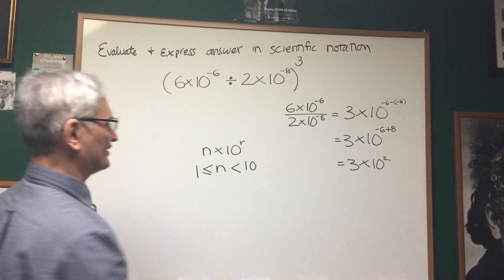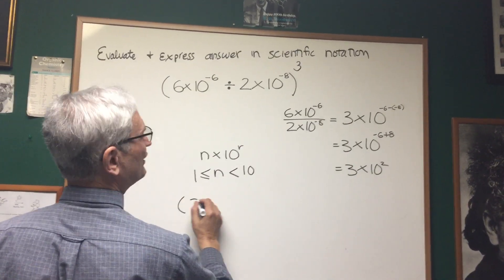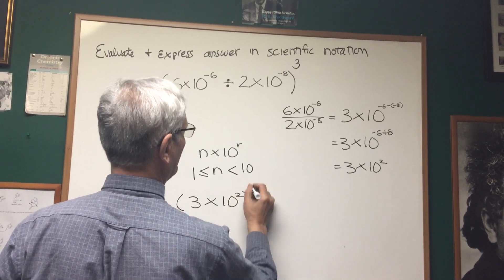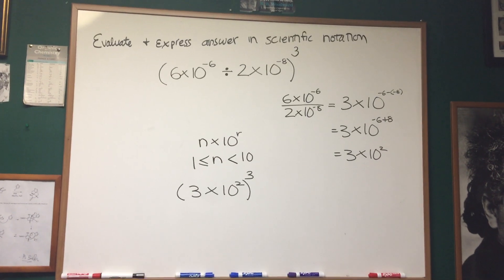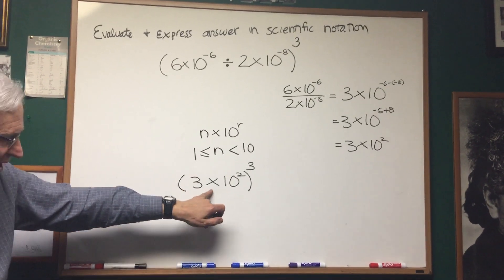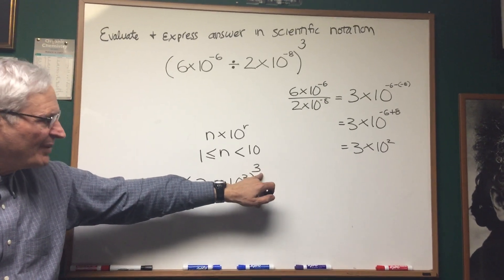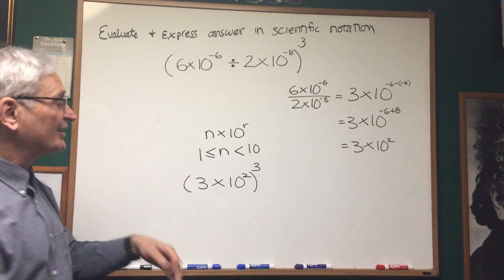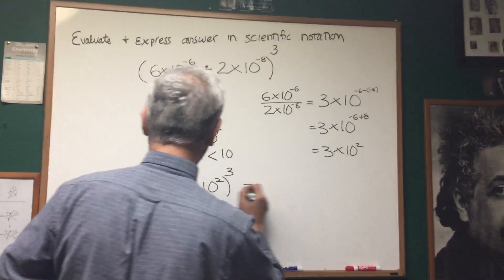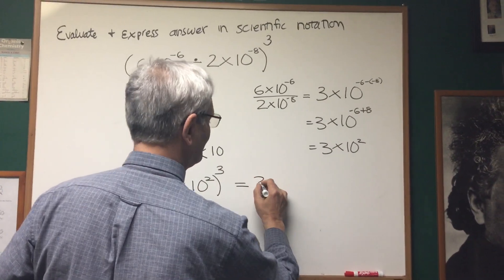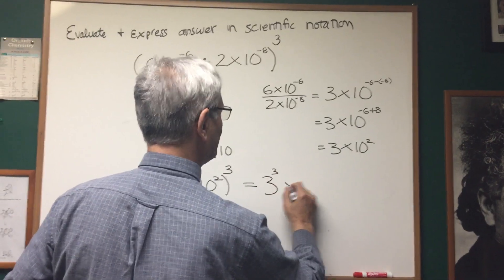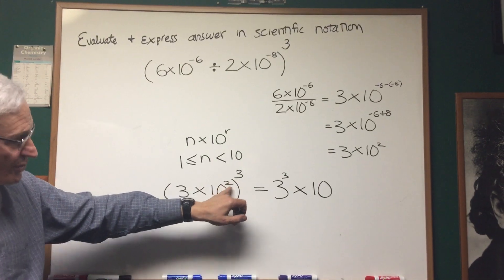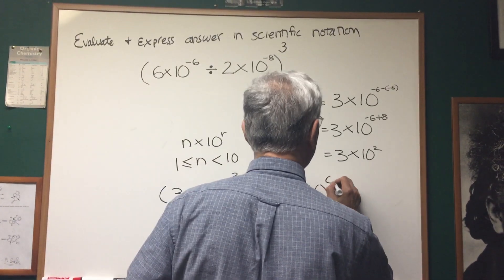Now we bring it down and finish the problem: 3 times 10 squared, raised to the third power. By the distributive property of exponentiation over multiplication, 3 raised to the third power is 27, and to raise an exponent to a power we multiply the exponents: 2 times 3 is 6.